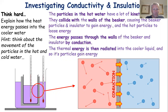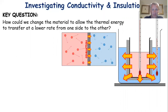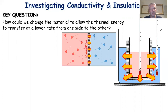To understand thermal conductivity and how we can improve insulators, we need to understand how these heat transfers take place. How can we change a material to allow thermal energy to transfer at a lower rate? We might consider making it thicker or thinner, changing the material entirely, giving it a bigger or smaller surface area, or painting it a different colour. We want to transfer thermal energy at a lower rate - less heat passing through, or heat getting through more slowly - so we're talking about improving a material as an insulator.